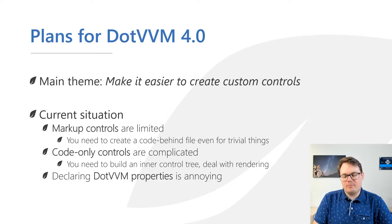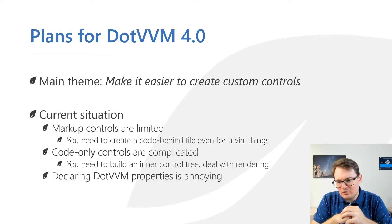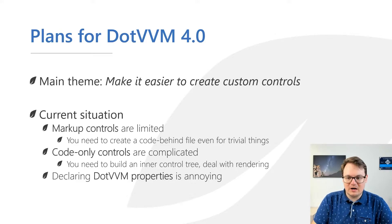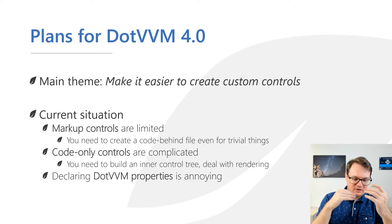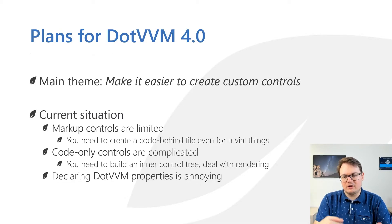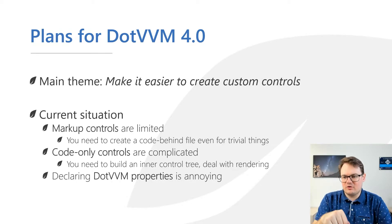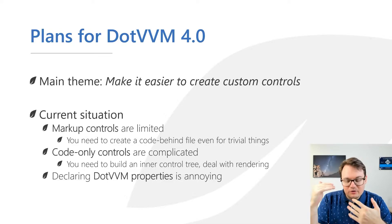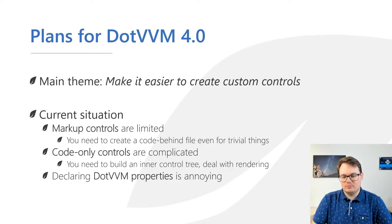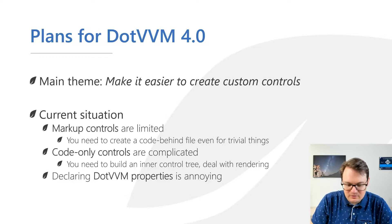Another issue is how DotVVM properties are declared — they're not regular get/set properties. You need to use the code snippet 'dot-prop tab tab', which generates a large amount of boilerplate code, similar to dependency properties in WPF. The reason is that the property needs to support both a raw value and a data binding expression. We're thinking about ways to make property declaration easier, perhaps auto-generating it, because complex controls can have hundreds of lines of these DotVVM property declarations.